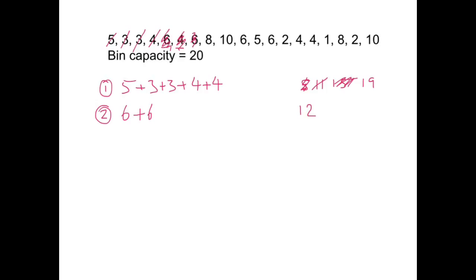The next number is an 8. I can't fit that into the first bin, but I can fit it into the second one. So I put that in. That gives me a total of 20. And that one is now finished. I'll put a tick to say that one's complete, so I don't keep looking at it. Cross off the 8. The 10 doesn't fit in the first bin. The second bin's finished. So I start the third bin. There's the 10.